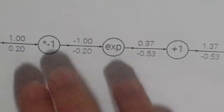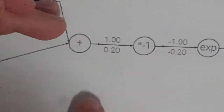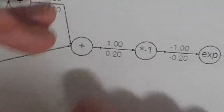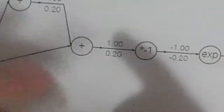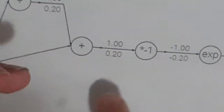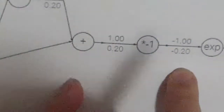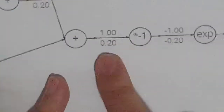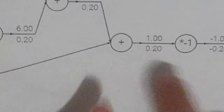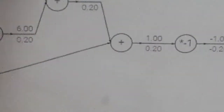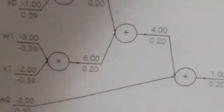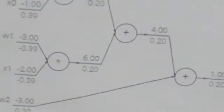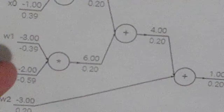Now we have x to the negative one. The derivative of that is -1. We multiply by our previous derivative -2 and get +2. And this is backpropagation — that's all we're doing.